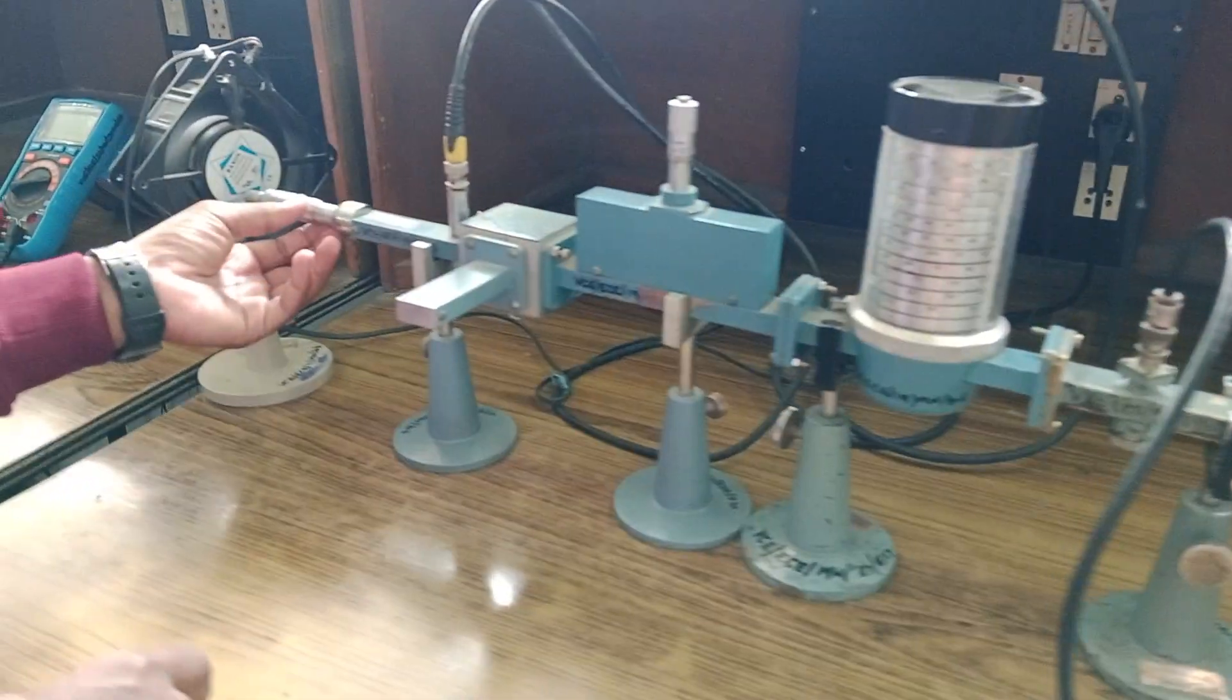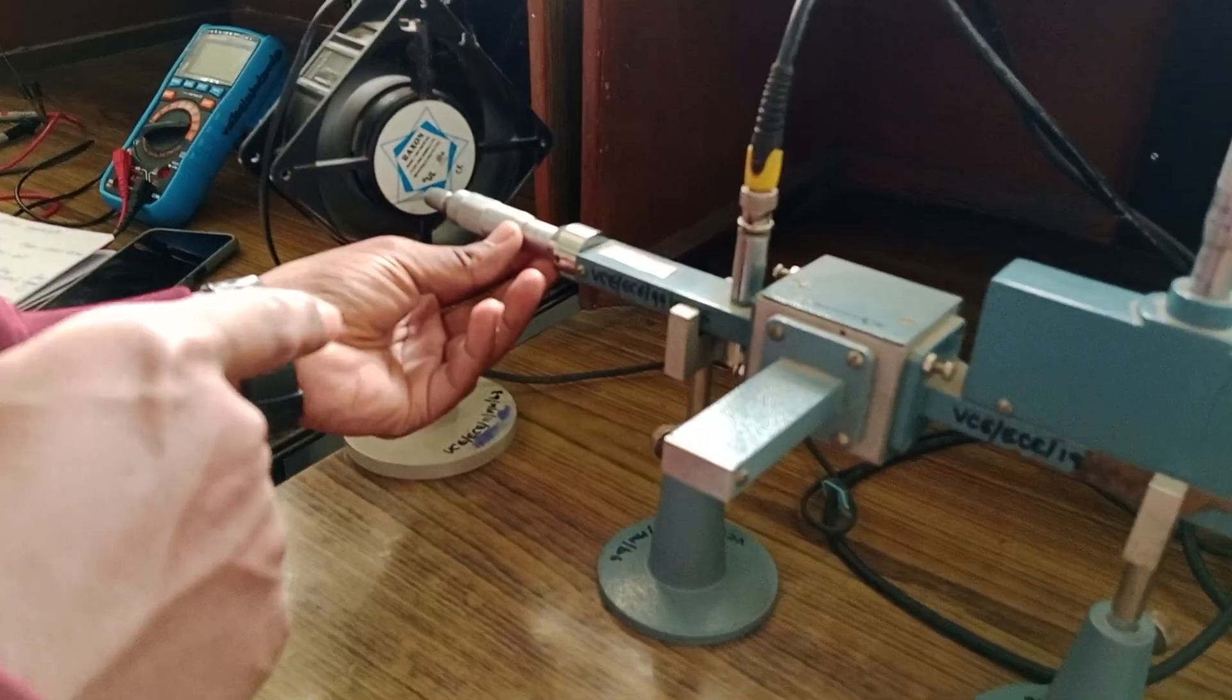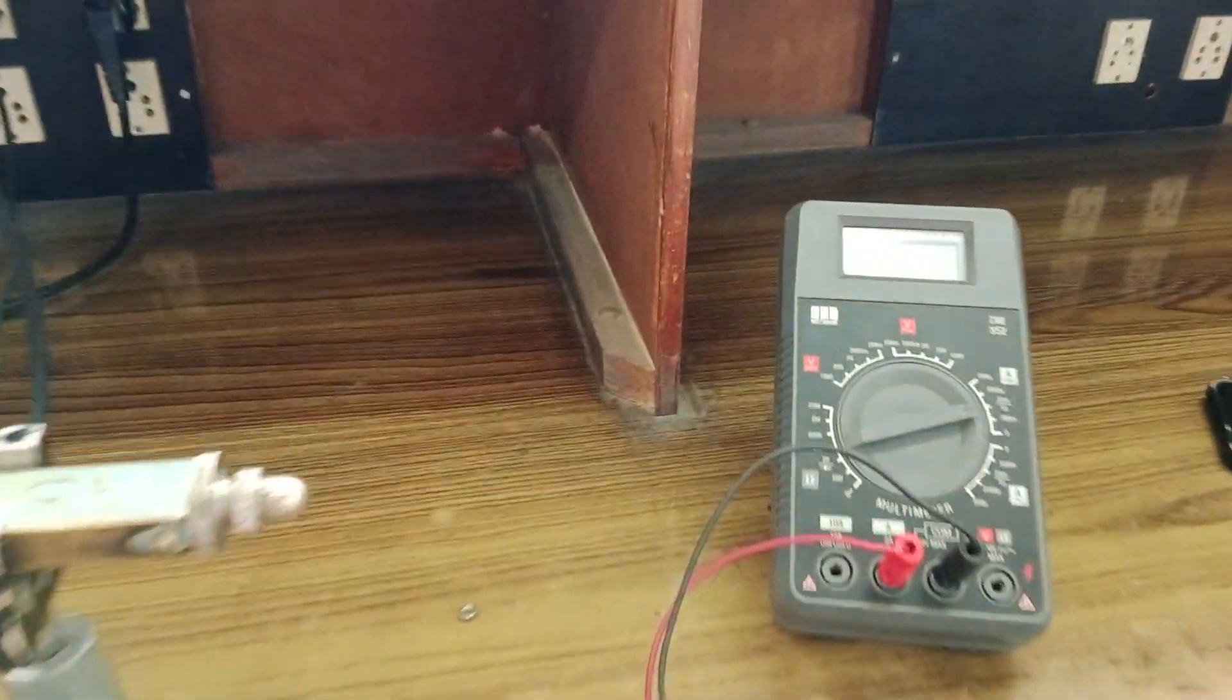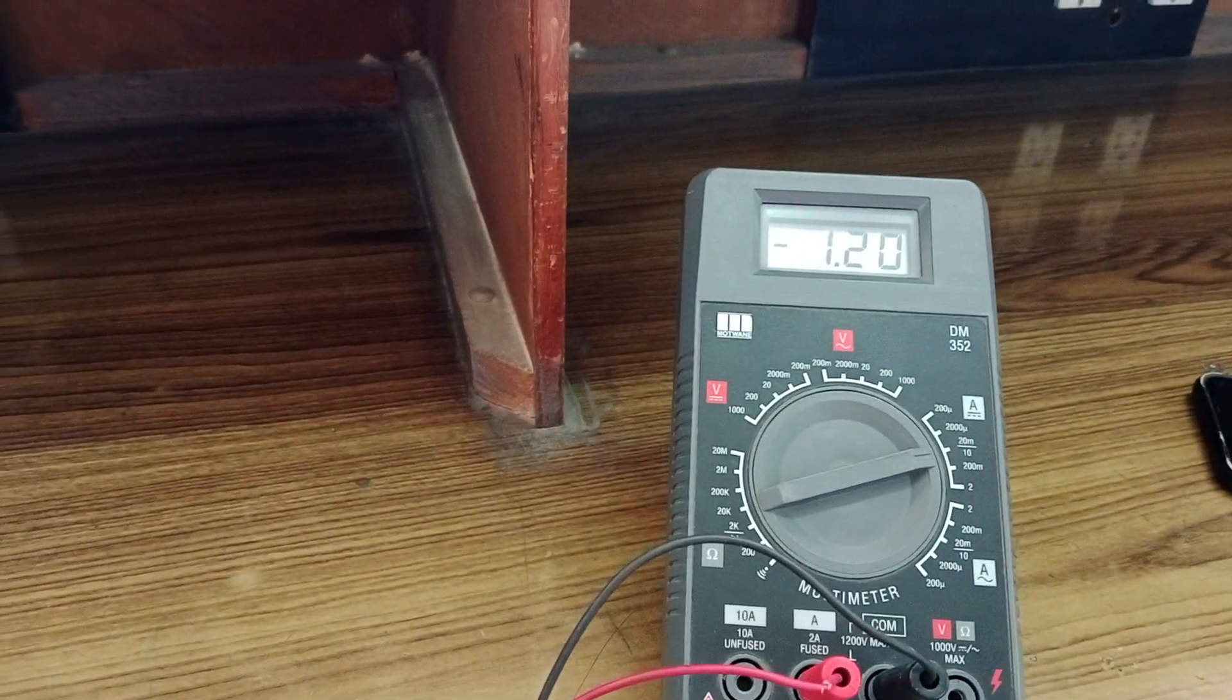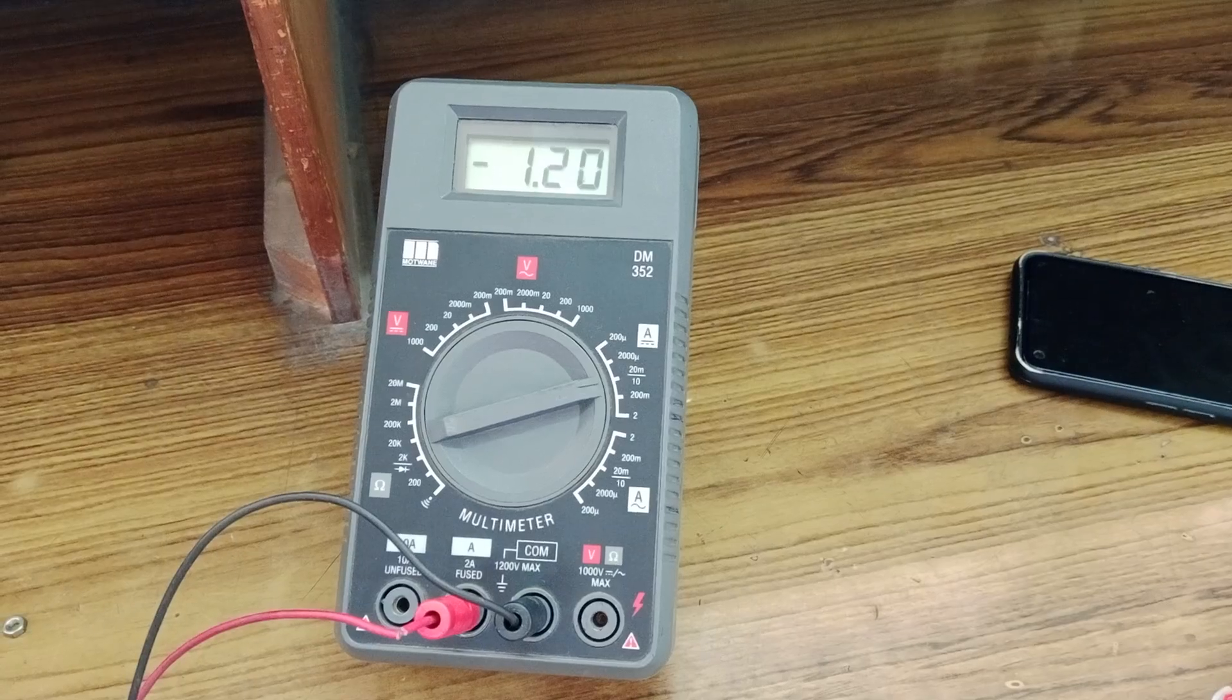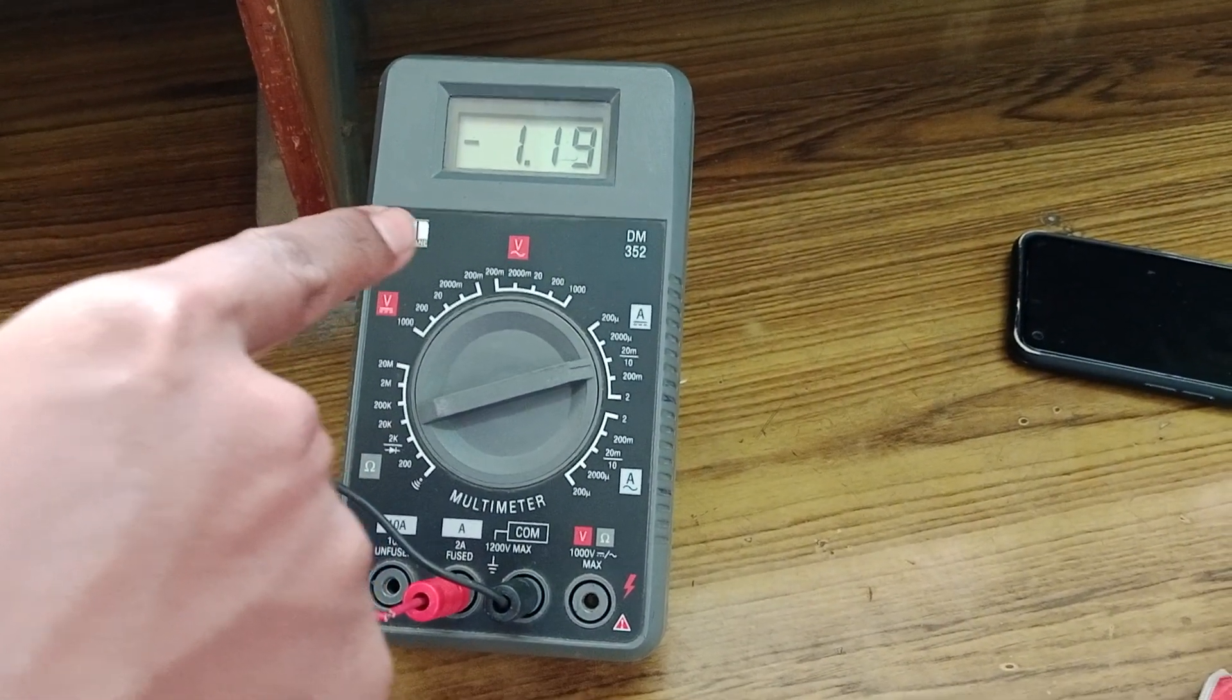Then what you have to do is slowly adjust the gun oscillator in order to get exact 1 milliamp of current. So you have to adjust this and look at the meter, vary this and observe the current readings. If you see here, at present we are getting 1.16 milliamps.